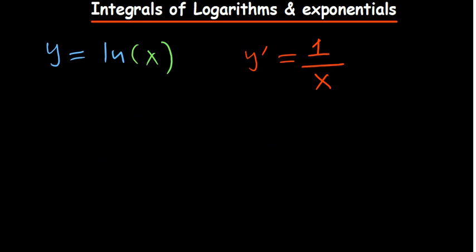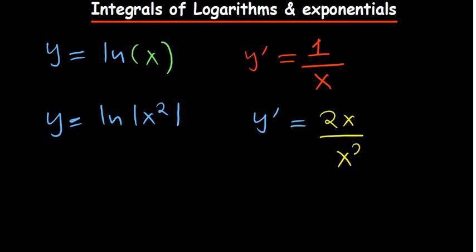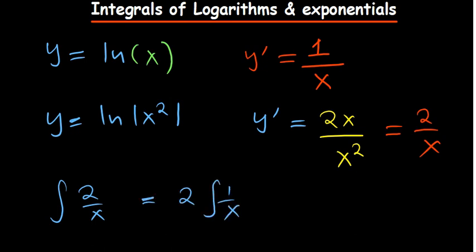This can be backed up by another example: if y = ln(x²), then y′ is the derivative of what is in the brackets, which is 2x, divided by x² itself, which reduces to 2/x. The opposite — the integral of 2/x — we pull out the constant 2 and integrate 1/x, giving 2·ln(x). By log rules, the 2 can go back as a power, giving ln(x²), confirming the result.